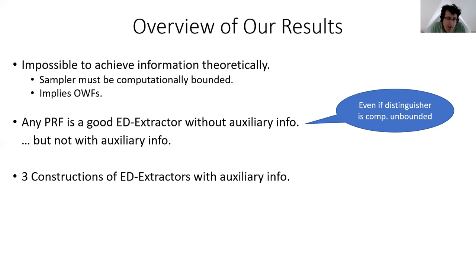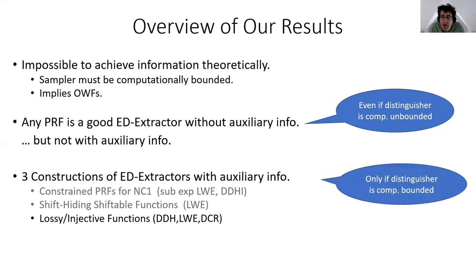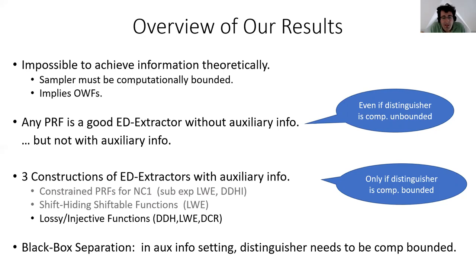In the setting with auxinfo, we give three constructions using stronger assumptions, based on intermediate notions: either constrained PRFs, shift-hiding shiftable functions, or lossy/injective functions. The last approach gives the most instantiations — it can be based on DDH, LWE, or decision composite residue assumptions. So most assumptions under which we have public-key crypto also give us such extractors. However, here we only get security for computationally bounded distinguishers, in contrast to the previous setting. Lastly, we give a black-box separation showing this is inherent in the auxinfo setting: the distinguisher needs to be computationally bounded, at least if you hope to have a reduction from a standard assumption.